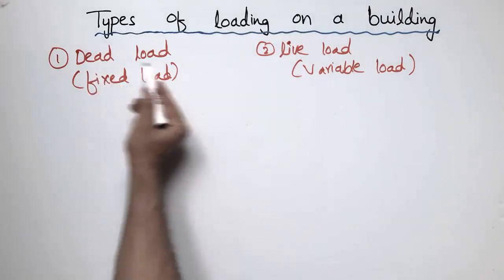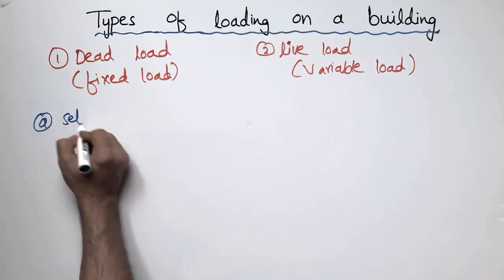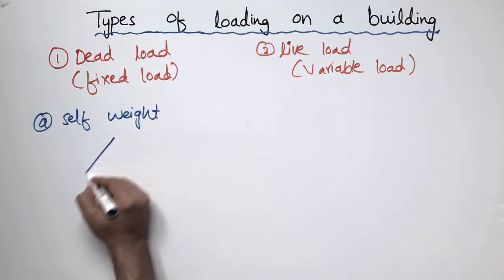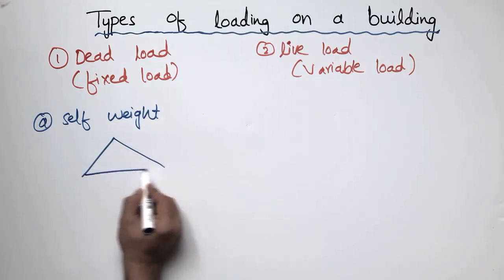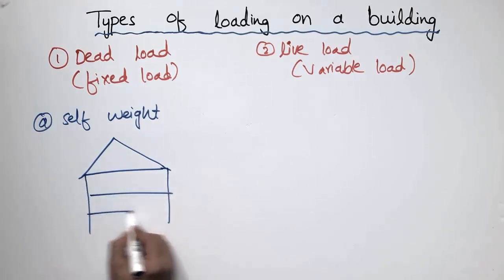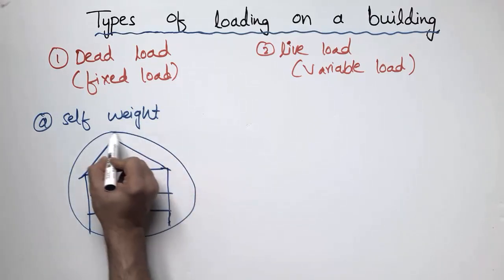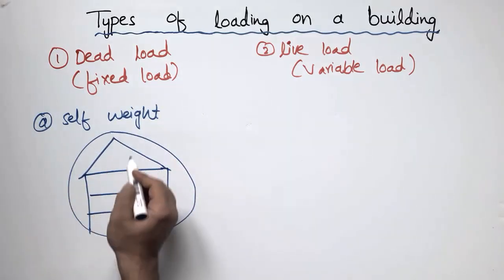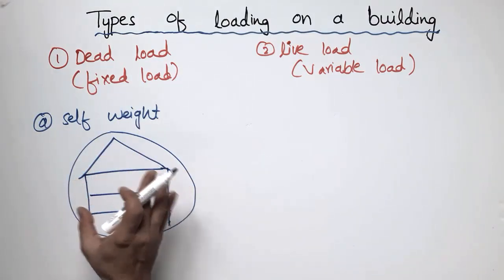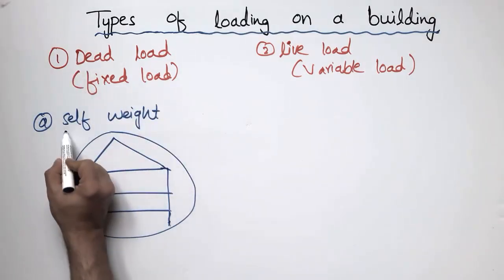Under the dead load, there is only one subclass, which is the self-weight of the structure. For example, if I draw a building with multiple stories, the self-weight of this building is called the dead load or the fixed load, because it does not change with the location. It is always fixed in one location until the building has been completely demolished.